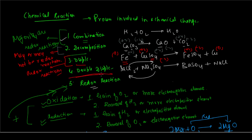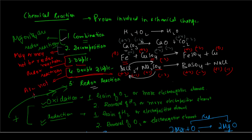But if you look at the double displacement reaction, take barium chloride plus sodium sulfate. Barium has +2 oxidation state, chlorine has -1, sodium has +1, and sulfate ion has -2 oxidation state. Just as we saw in the calcium carbonate case, there is no change in the oxidation number of any of the elements. This is applicable to all double displacement reactions — you will not see a change in any element's or ion's oxidation number. Hence, double displacement reactions are not redox reactions.